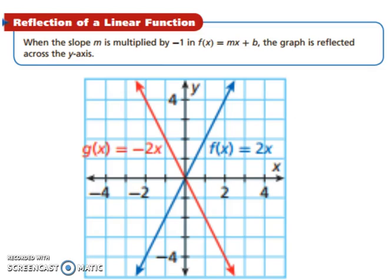Let's look at reflection now. This is when the slope m is multiplied by negative 1. So if we look below, if we were to ignore that, it would have just said 2x and 2x. They would have been the same line. But to make them reflect, you're going to have to multiply it by negative 1. So 1 is negative, 1 is positive, and the rest are the same.